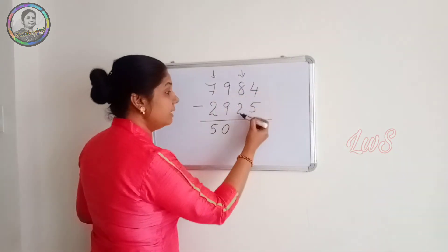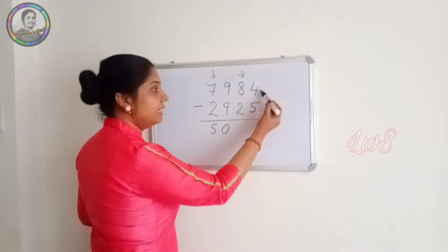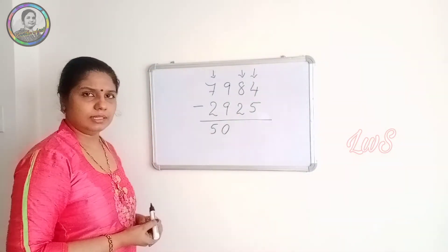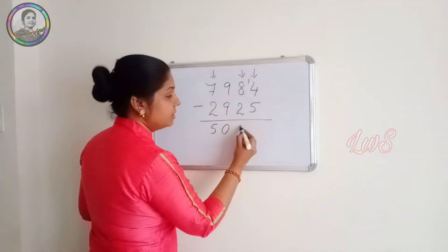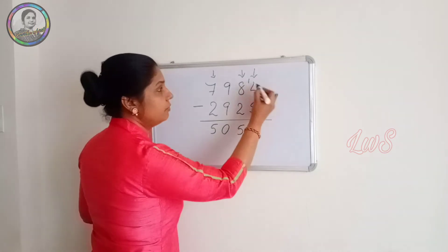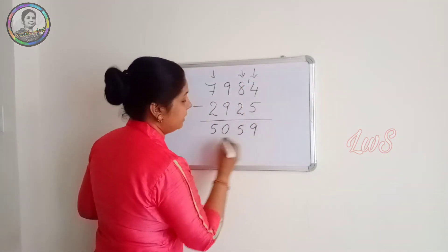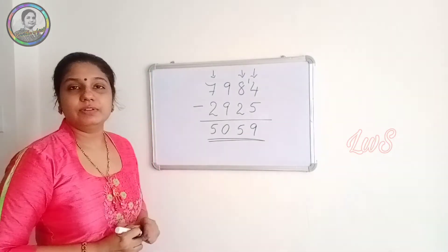Now here 8 minus 2 is 6. But when we look for the neighbors, he is having some deficiency. So we have to give 1 here. 8 minus 2, 6. But we write 5, giving 1 for the neighbor. Now 14 minus 5, 9. So the answer is 5, 0, 5, 9.